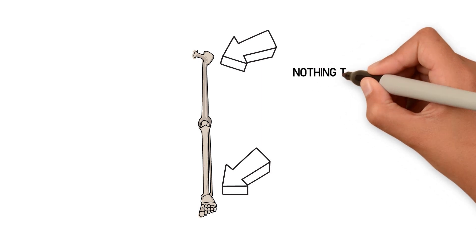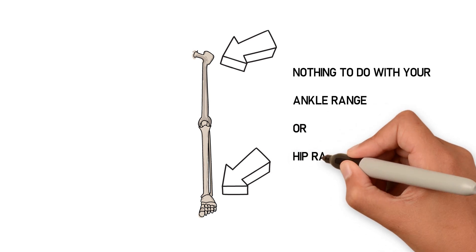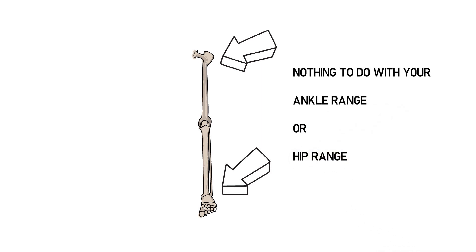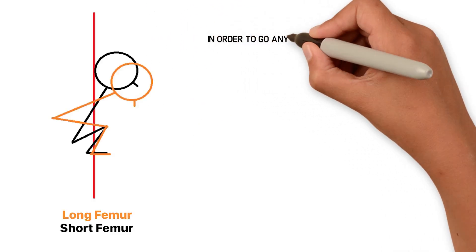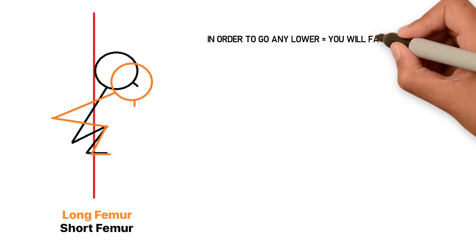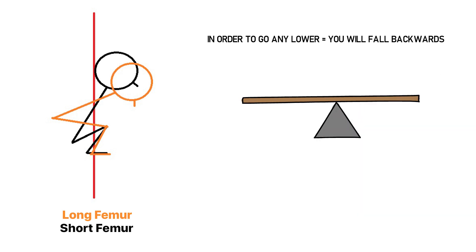This has nothing to do with your ankle range or your hip range. It might just be that you've reached the limit of how far your trunk can lean forward. In order to get any lower, you might feel like you're falling backwards because you couldn't keep the center of mass over your feet. People with long femur would often say things like, I just can't go any lower.